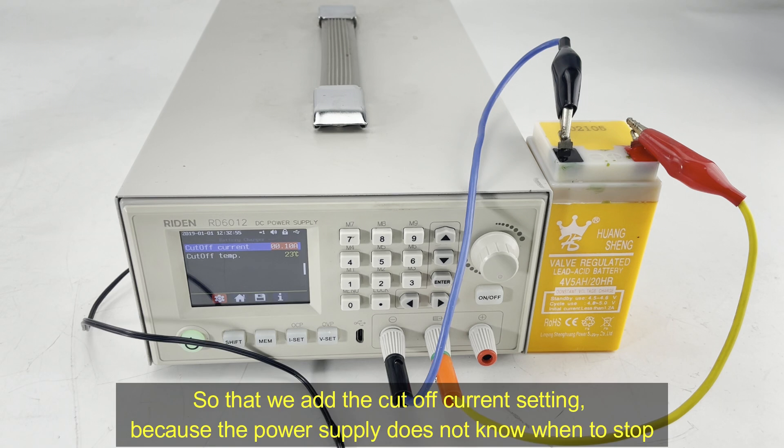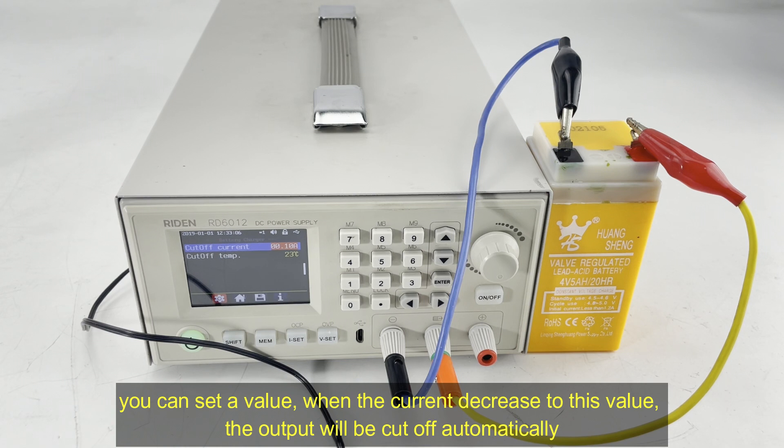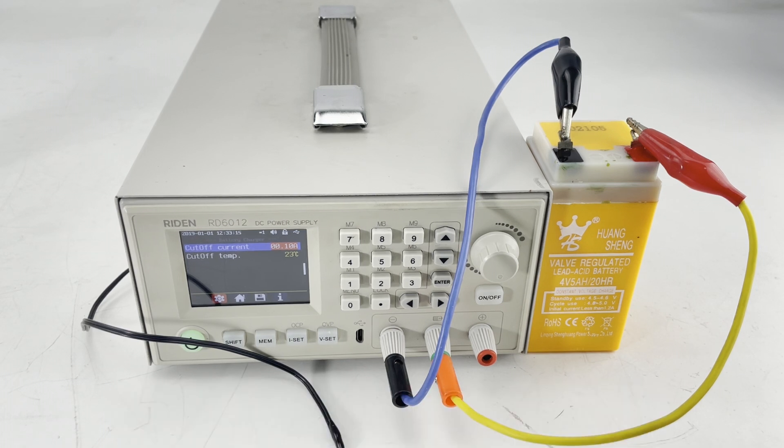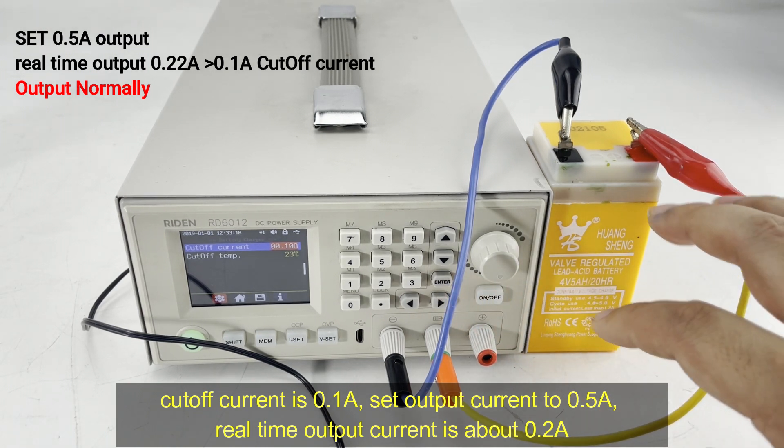So we add a cut-off current setting. Because the power supply does not know when to stop, you can set a value. When the current decreases to this value, the output will be cut-off automatically. Here you can see the cut-off current is 0.1 ampere and the charging current is 0.5 ampere.